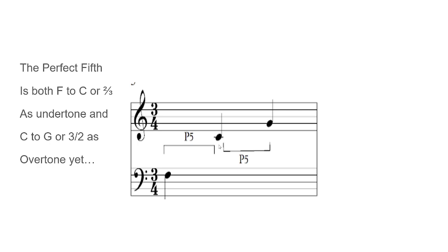Even though these are both the perfect fifth, the overtone is three-halves as C to G, and the undertone is two-thirds as F to C, while C is the fundamental tone. As Alain Connes explains, a point in space-time is actually derived from a chord — a two-note frequency as a correlation of two frequencies.